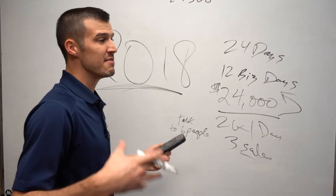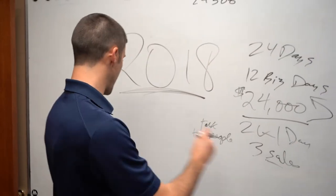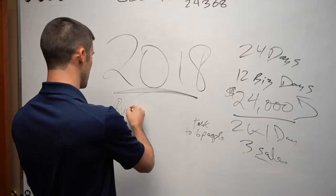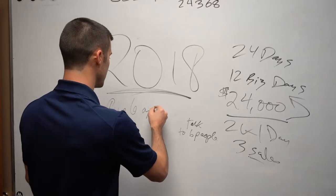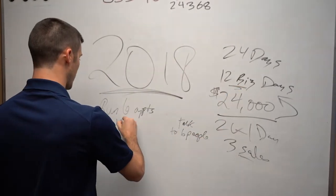So my whole thing is, even if I had to hire part-time telemarketers, even if I had to door knock a lot, doesn't matter. I would want to put the whole focus on running six appointments, 12 times, 12 business days.